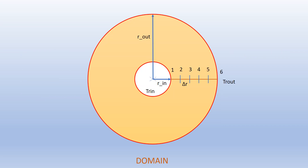Our domain is shown here — this is basically a cross section of a hollow cylinder. The inside radius is given as R_in and the outside radius is R_out. The temperature at the inside surface of the cylinder is T_Rin and the temperature at the outside surface is T_Rout. The radial distance is divided into a number of segments, numbered from 1 to 6, and the segment length is delta R.